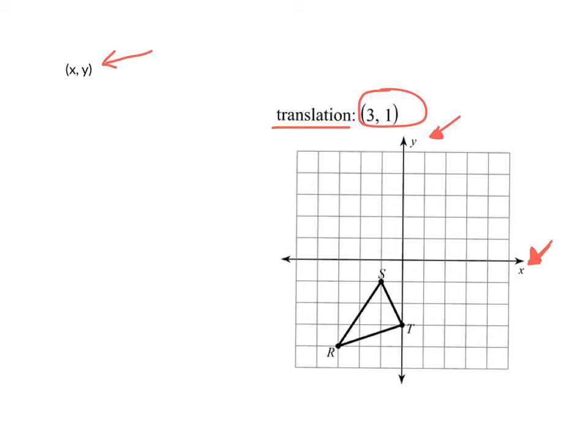So whatever the first number is, the X, it is going to tell you whether you are moving right or left. And how do you know which that is? Well, if the number in the X position is positive, you're going to move it right. And if the number in the X position is negative, you're going to move it left.